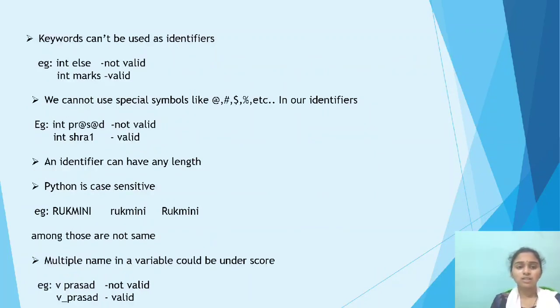And next one is keywords cannot be used as identifiers. Example, int else. It is not valid because else is a keyword. Next one, int mox is valid because mox is not a keyword.